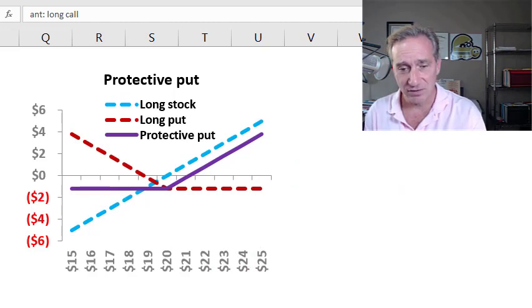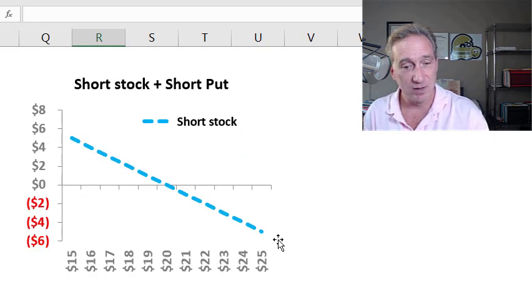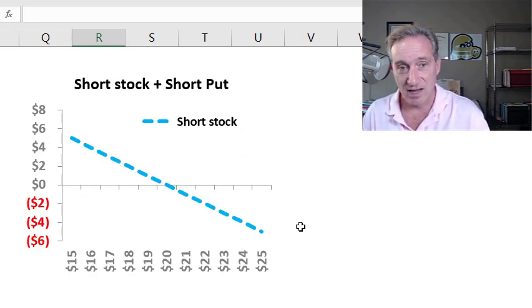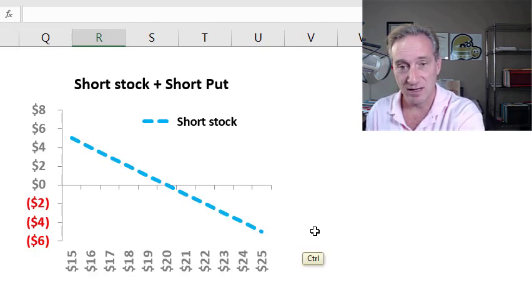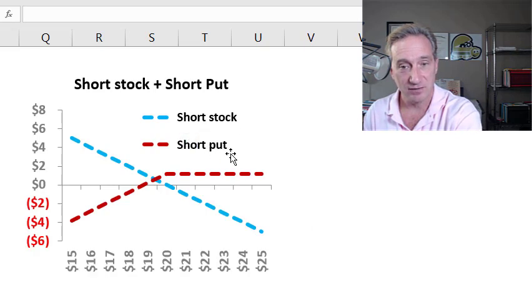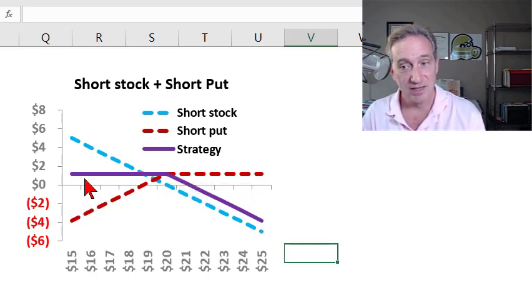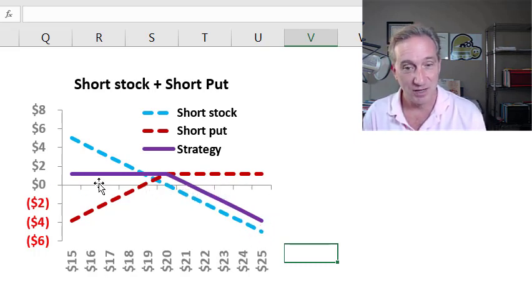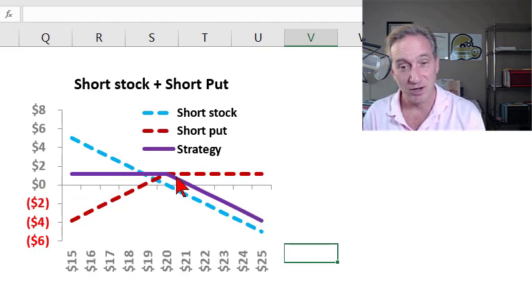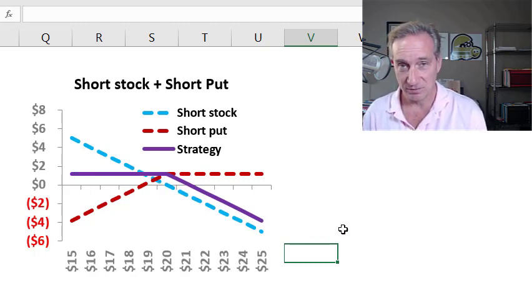The second of the four is just the counterparty or mirror image to that. If we imagine ourselves in the shoes of that protective put and we do the trade with a counterparty, what is the counterparty's experience? They would be short a put plus short a stock. And it would combine to the purple portfolio, which is essentially similar as a profit diagram to writing a call option. Writing a call would be collecting the premium income and hoping that it doesn't get exercised. So we have here this flat net profit and then being exposed at higher future stock prices.